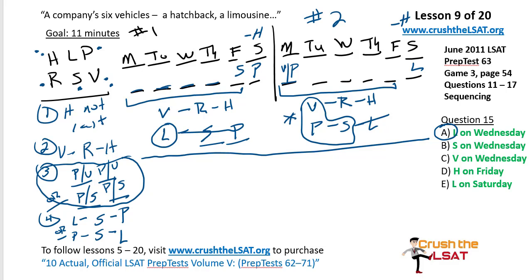Question 16: if L is serviced on Saturday, which of the following must be true? We're in scenario two. Nothing jumps out immediately, so we go through choices one by one. For A — P earlier than R — it seems possible but the V–R–H sequence and the P–S–L sequence are separate, so write a tilde and move on. For B — must P appear earlier than S? Yes, absolutely. Answer B.